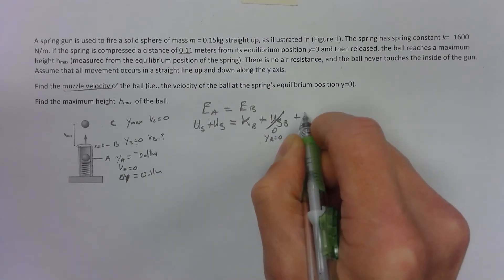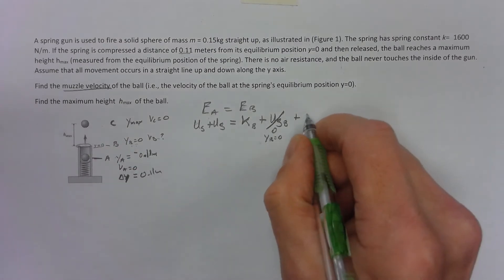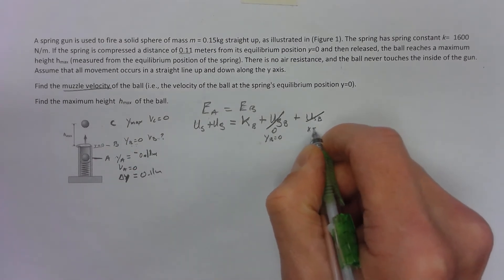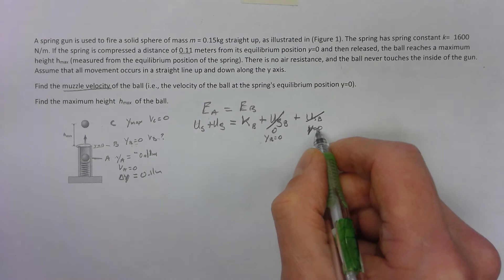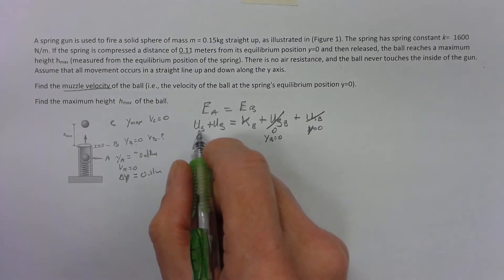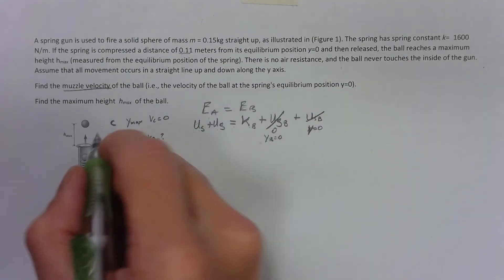And spring energy - when the spring is at equilibrium position, there's no spring energy at b either because the compression of the spring is zero. So the spring energy and gravitational energy are going to turn all into kinetic energy at that point based on where I chose height to be zero.